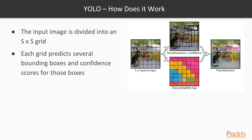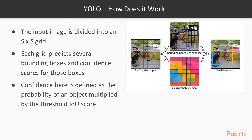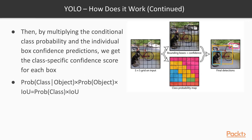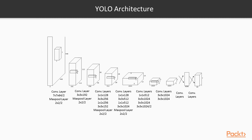Each grid cell predicts a number of bounding boxes and confidence scores. Confidence is defined as the probability of an object multiplied by the thresholded IoU score; IoU scores below 0.5 are given a confidence of zero. By multiplying the conditional class probability with the individual box confidence, we get class-specific confidence scores for each box. YOLO's architecture consists of 24 convolutional layers followed by 2 fully connected layers, with alternating 1×1 convolutional layers to reduce feature space.